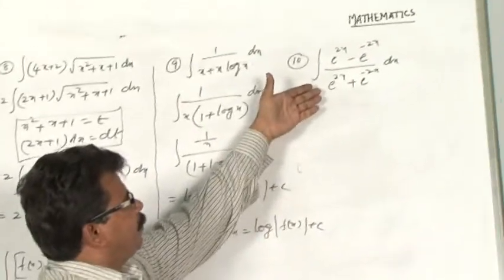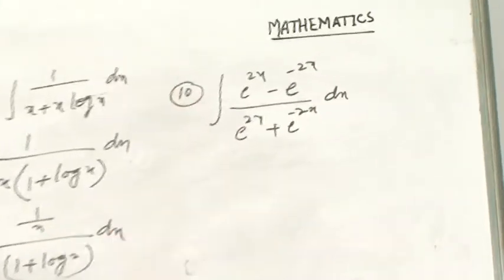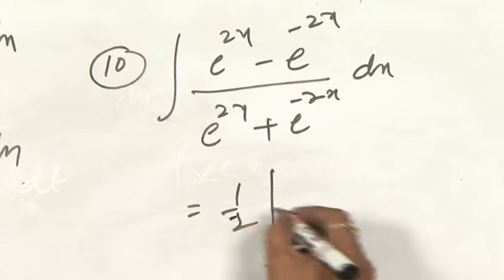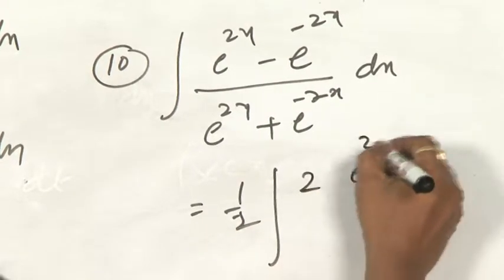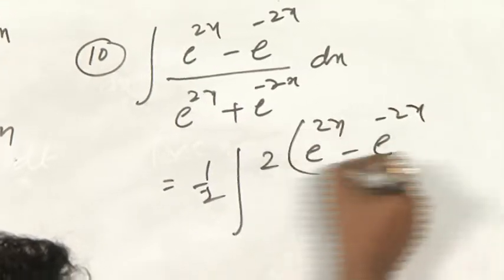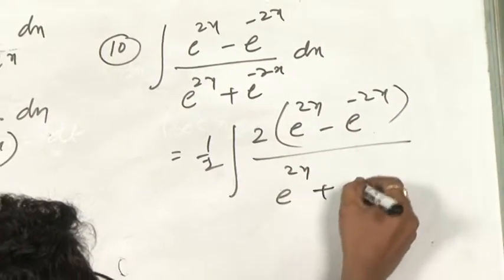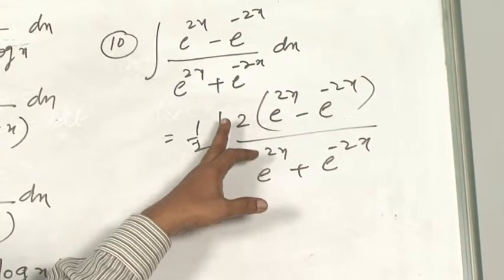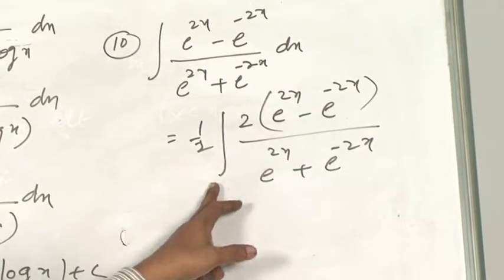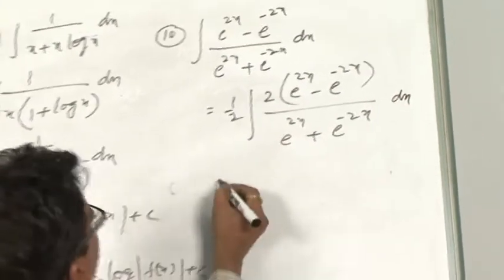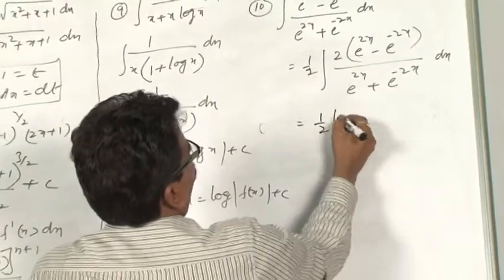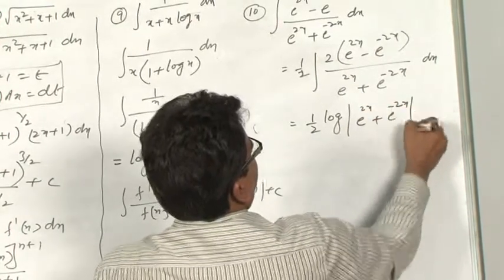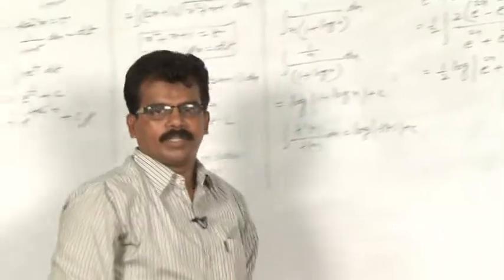Here also, the derivative of the denominator is in the numerator — only a factor of 2 is missing. I will multiply and divide by 2: (1/2) · integral of [2(e^(2x) − e^(−2x))] / (e^(2x) + e^(−2x)) dx. If you find the derivative of the denominator, it gives the numerator. It is in the form of ∫f′(x)/f(x) dx. Therefore, the answer is (1/2)·log|e^(2x) + e^(−2x)| + c.